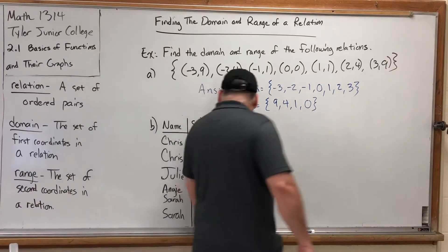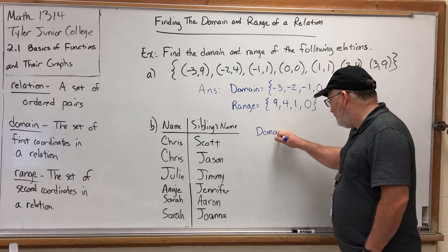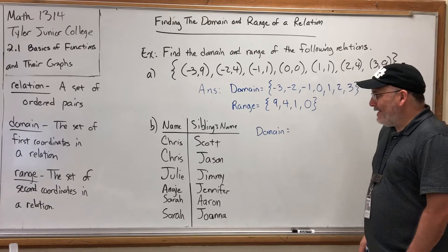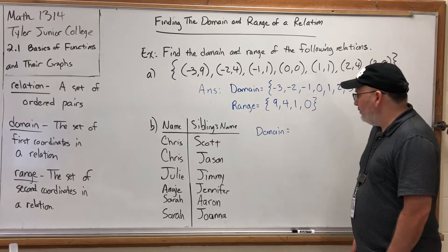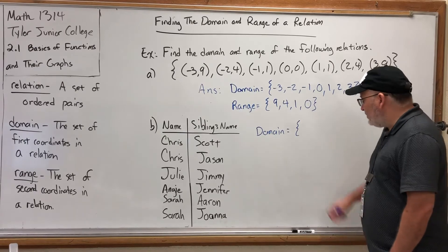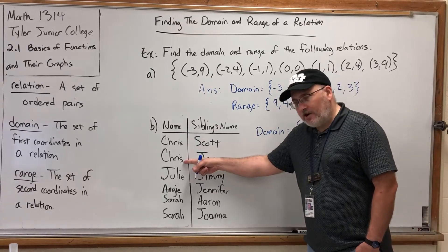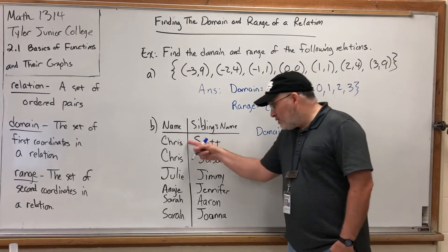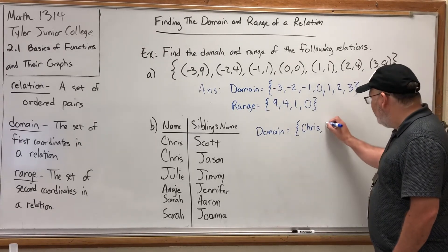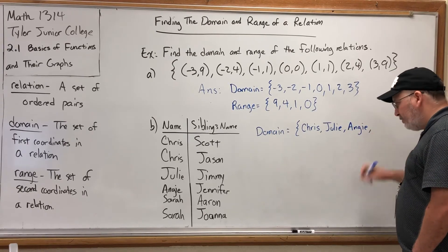Let's move to the second example, where we had the names of some people and the names of their siblings. What is the domain of this relation? When it's in a table, the domain is in the first column and the range is in the second column. The only thing we have to do is make sure not to write entries twice. For example, Chris appears as the first first-coordinate and also the second first-coordinate. Sarah shows up twice as well, so we only list her once in the domain.